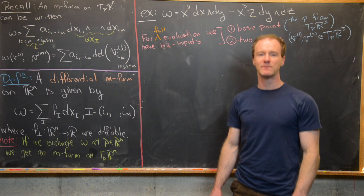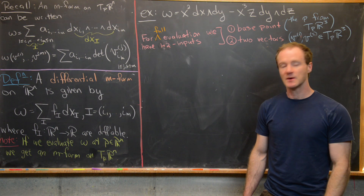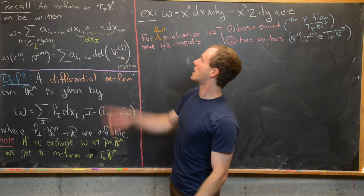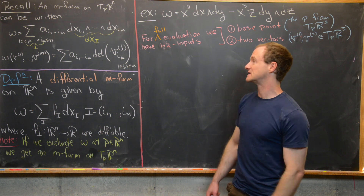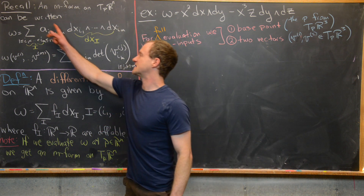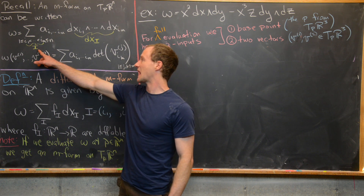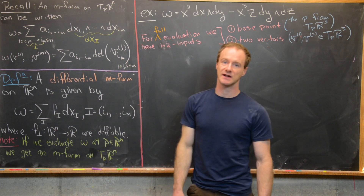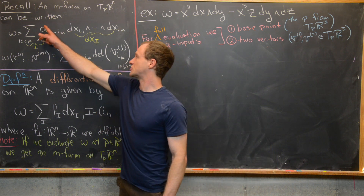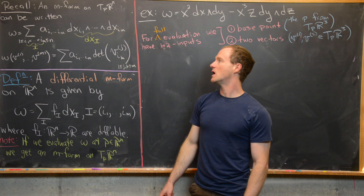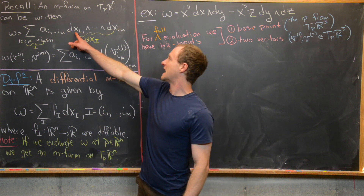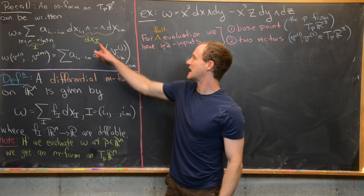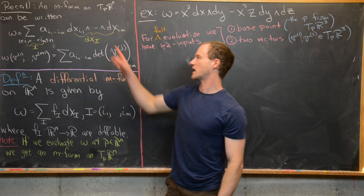We spent a couple of videos looking at the notion of an M-form, now we want to look at differential M-forms. Before we do that, I want to recall what the general shape of an M-form is. An M-form on T_p(R^n) can be written as the following linear combination: a sum over the multi-index I, where I is made up of numbers i_1 up to i_M that are increasing and between 1 and N, with coefficients A_{i_1...i_M}, and then dx_{i_1} wedge all the way up to dx_{i_M}. We often collapse these into the shorthand dx_I and A_I.